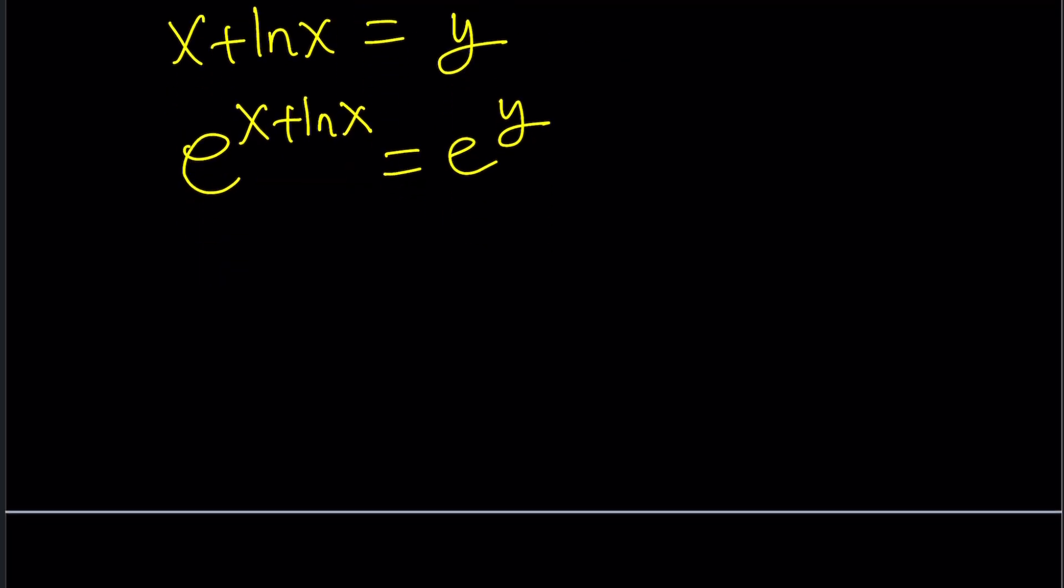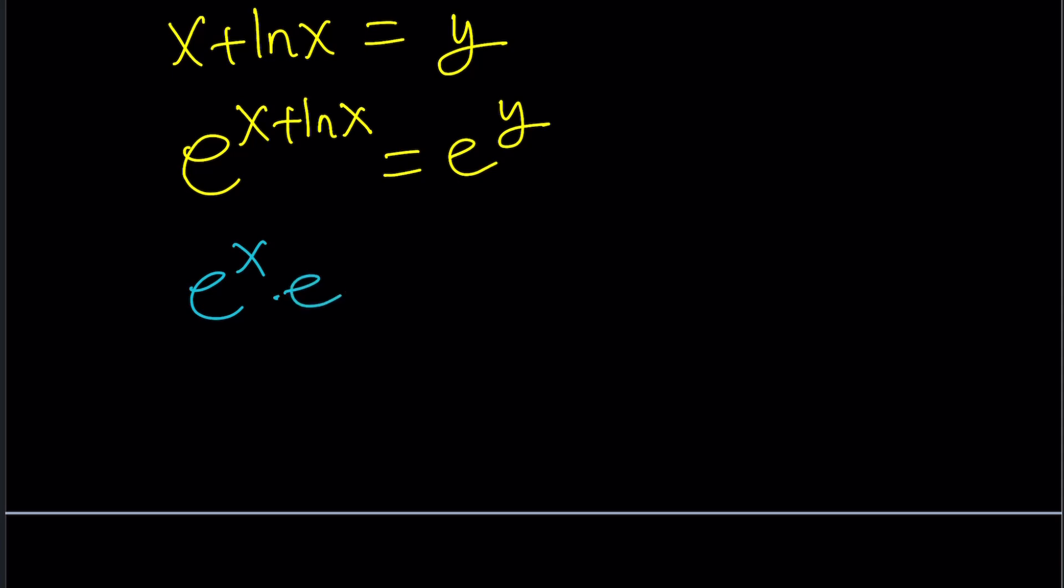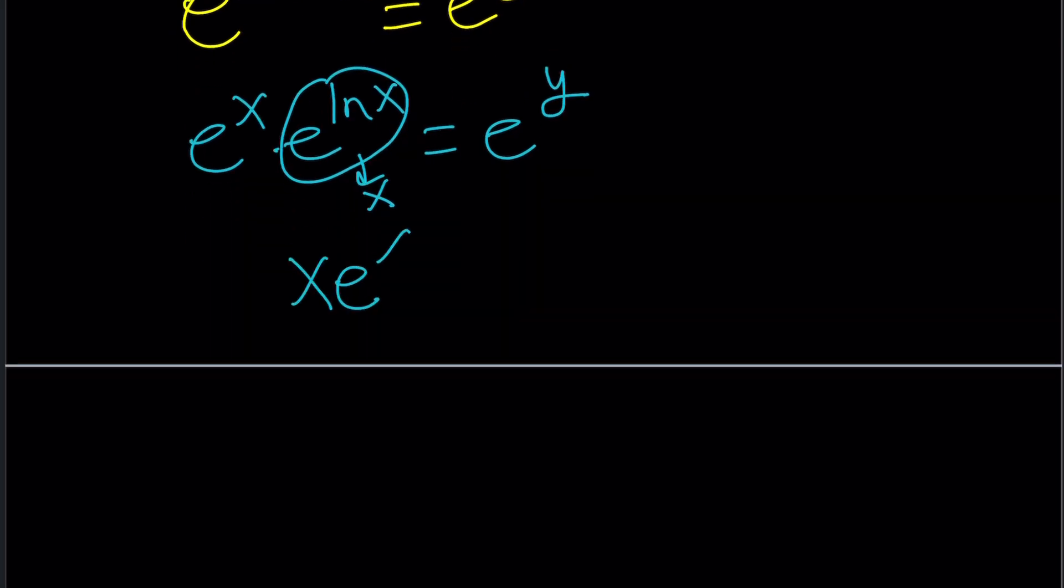Whenever you see x + ln x, you should do it. Even if you see x times ln x, I think you should do it because it's going to help you. Now, the next thing we do is separate this into a product. And then, consider the fact that e^(ln x) = x. So, this becomes x. And this gives you e^x times x, which you can write as x e^x. Awesome. Great. Does this remind you anything? Hopefully, it does. And this is equal to e^y.